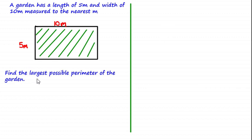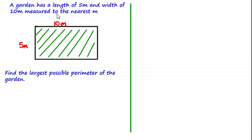Welcome back. We're now going to go through the solution. In this question we've been asked to find the largest possible perimeter of the garden. The perimeter of a shape is the sum of its sides. The reason there is a largest possible perimeter is because the length and the width have been measured to the nearest meter, which means there are a range of possible values they could have been before being rounded to five and ten.